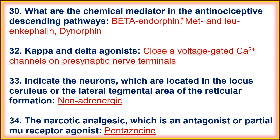Next, what are the chemical mediators in the nociceptive descending pathway? These are the chemical mediators: beta-endorphin, methionine-enkephalin, leucine-enkephalin, and dynorphin. These are the endogenous painkillers present in our body. Kappa and delta agonists close the voltage-gated calcium channel on the presynaptic nerve terminal, hence the neurotransmitter will not release and the pain signal will not be perceived on the postsynaptic nerve terminal.